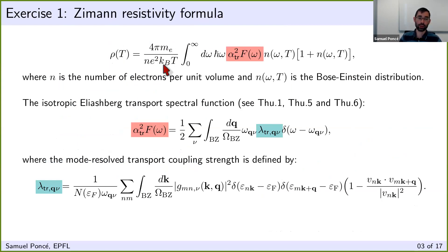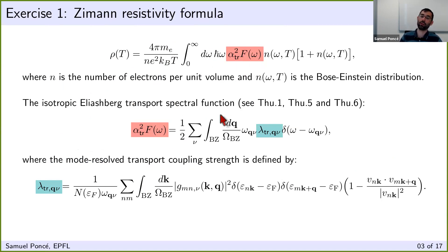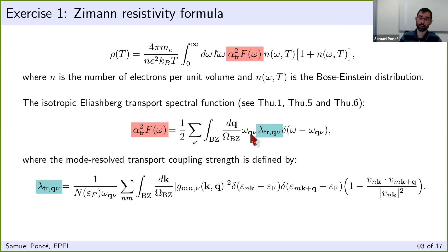The resistivity is inversely proportional to temperature, and you have this integral containing the transport Eliashberg spectral function. That function will be discussed on Thursday by Roxana Margine when she covers superconductivity — this is closely linked with superconductivity. The only difference is that this equation is written as the phonon frequency times the mode-resolved transport coupling strength.